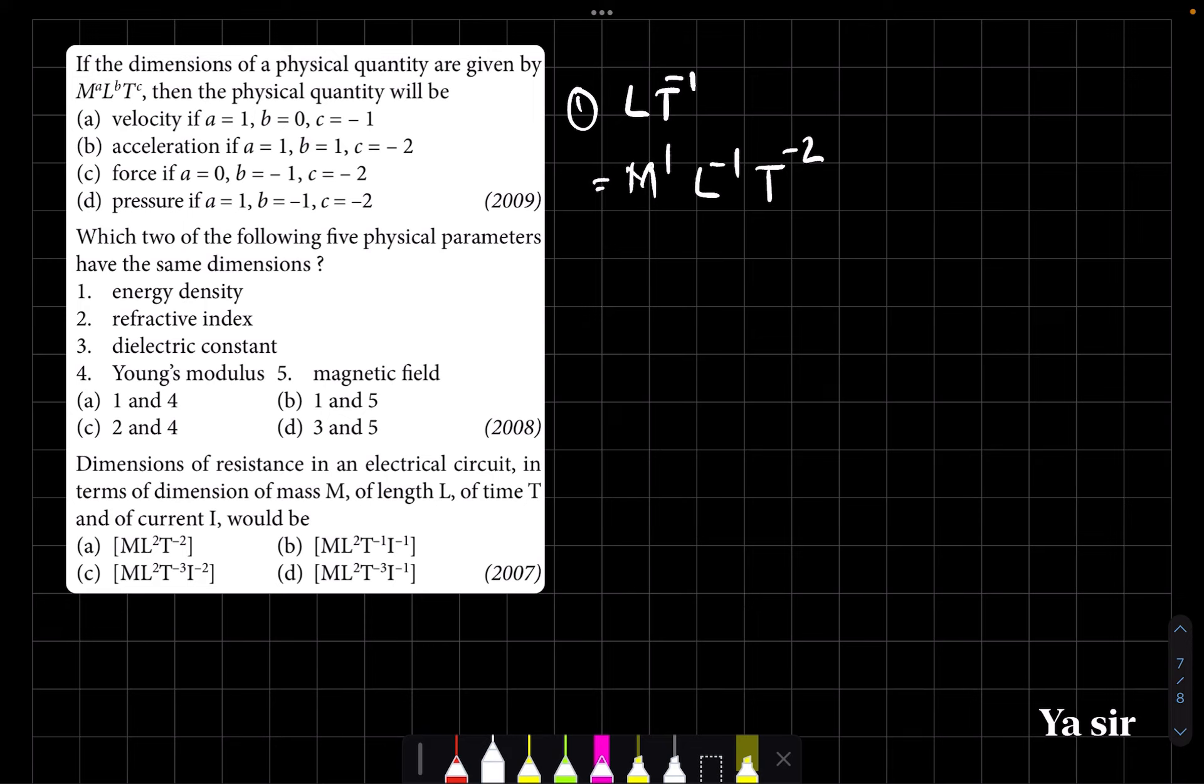So pressure is equal to m raised to 1, l raised to minus 1, t raised to minus 2. Pressure dimensional formula, correct. So correct option, this one. You don't need to solve this, just look at the question and you will get it easily. Next.